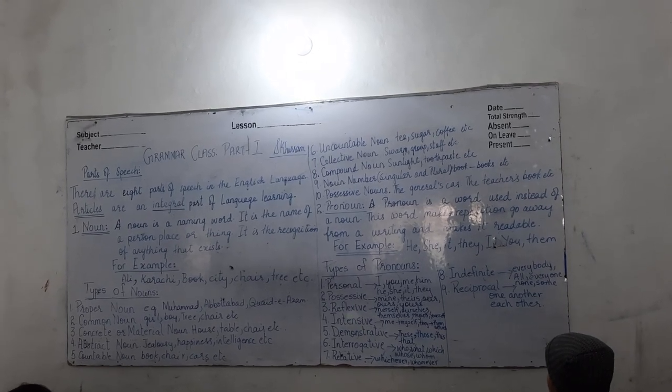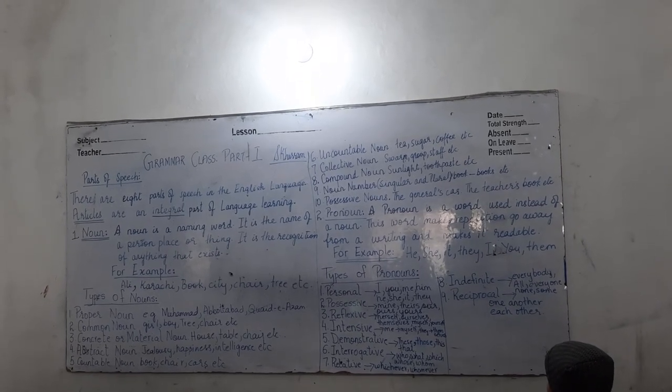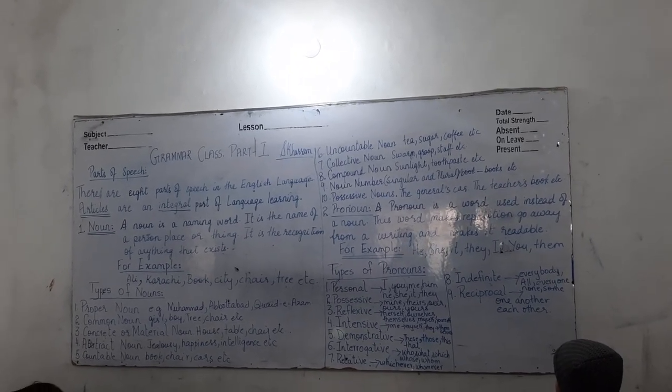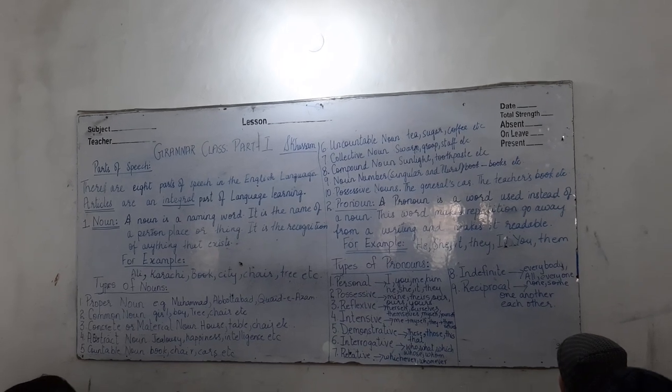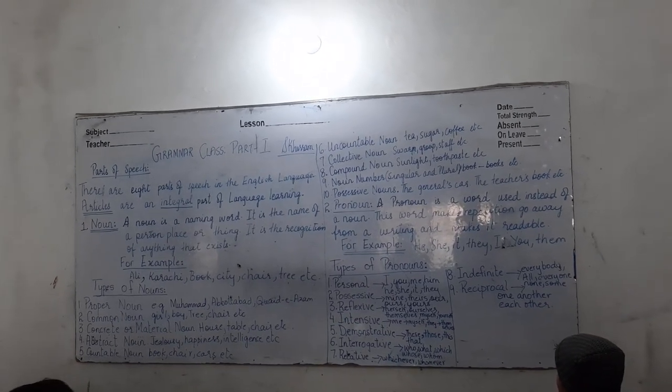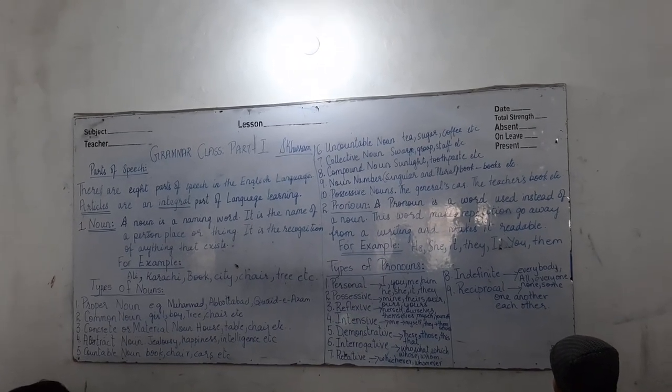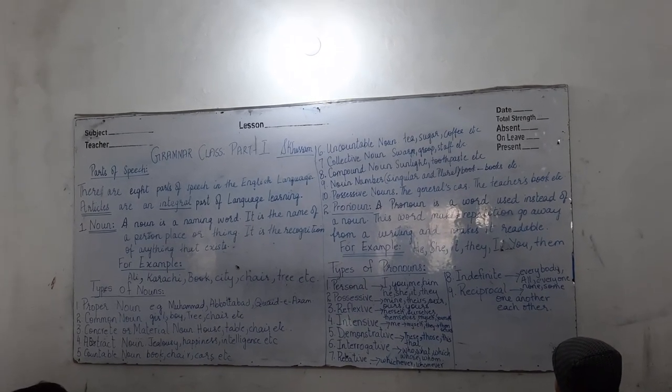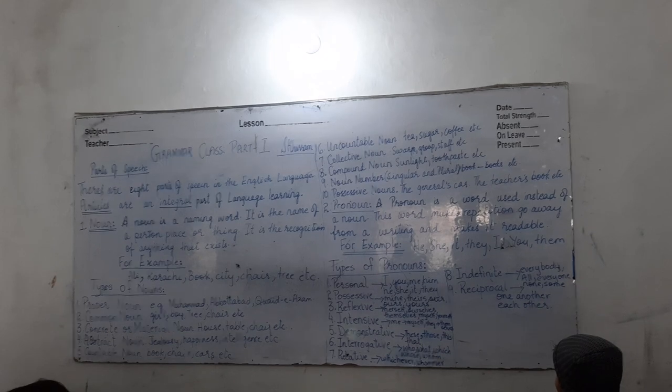For example: Ali, Karachi, book, city, chair, tree, etc. Anything — any name that you give to anything — has to be a noun.